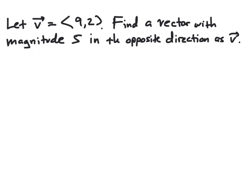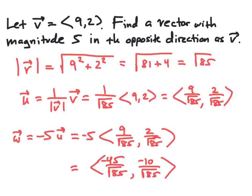Now in this example, we want to let v be the vector with component form 9, 2. We'd like to find a vector with a magnitude of 5 that has the opposite direction as v. You can pause the video and try this example yourself, then resume the video to see the solution.